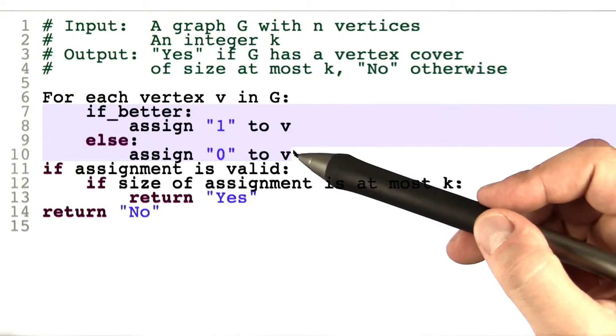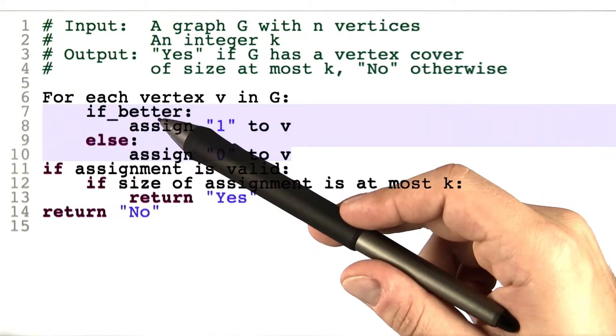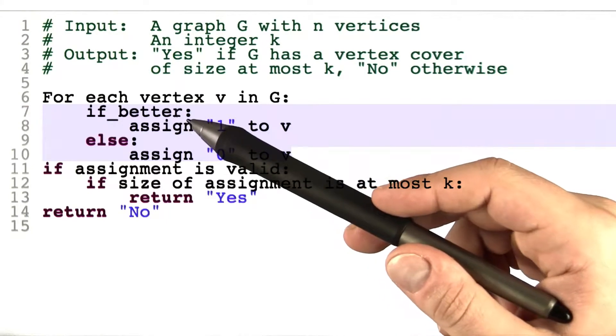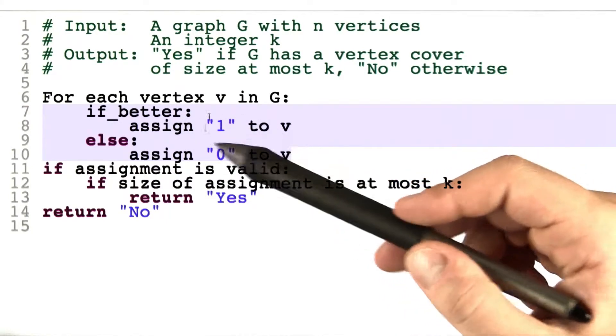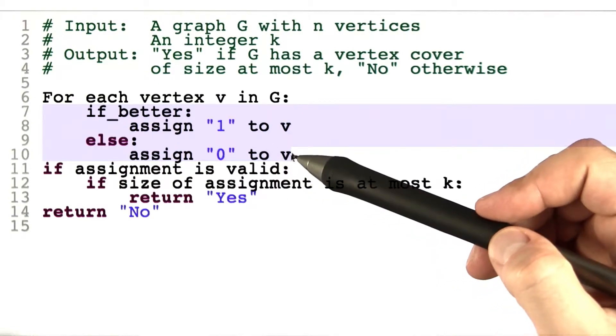Because we're basically trusting the if_better to tell us correctly whether we should put a vertex into the vertex cover or whether we shouldn't do that.